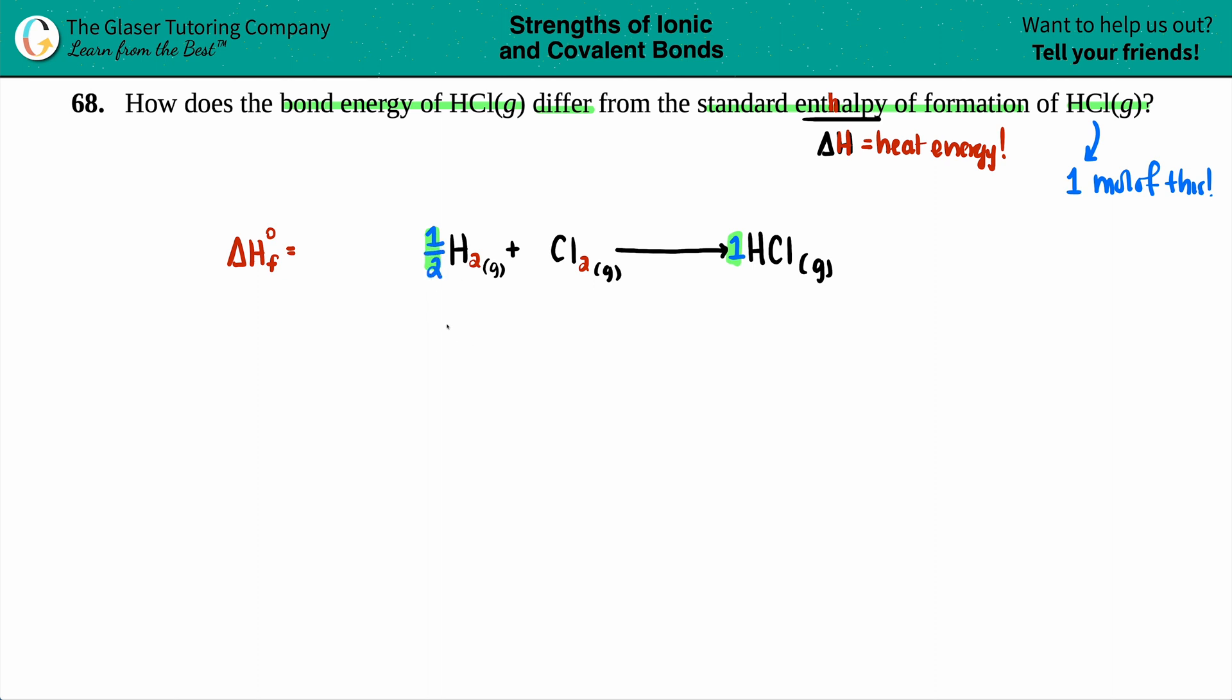So we can use fractions for your delta H's. Everywhere else, if it's like a balanced general equation, no fractions. And the same thing for the chlorine, you want one of them, you have two. So I need one half. And that would be the general formula for HCl and your enthalpy of formation.